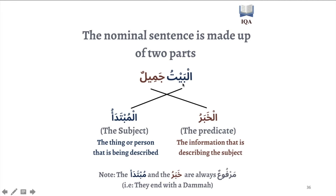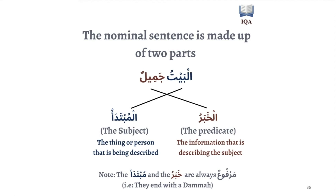So when I say 'the house is beautiful', albaytu is the thing being described, and jamilun — beautiful — is the information describing it. Note that the mubtada and the khabar are always marfu', which means they will always end with al-damma. It would be wrong to say albayti jamila or albayta jamili. It must be albaytu jamilun with al-damma at the end. That is the nominal sentence.